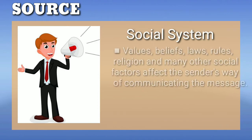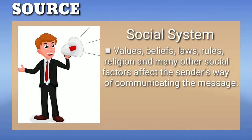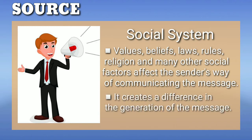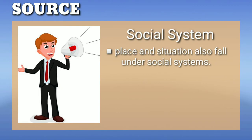The fourth factor is social system. Values, beliefs, laws, rules, religion, and many other social factors affect the sender's way of communicating the message. It creates a difference in the generation of the message; place and situation also fall under social system. As a speaker, he must consider the social system so the receiver feels the speaker's sincerity. For example, imagine a politician delivering a speech proposing to construct a temple in a Muslim-dominated area — what would be the reaction of the listeners?